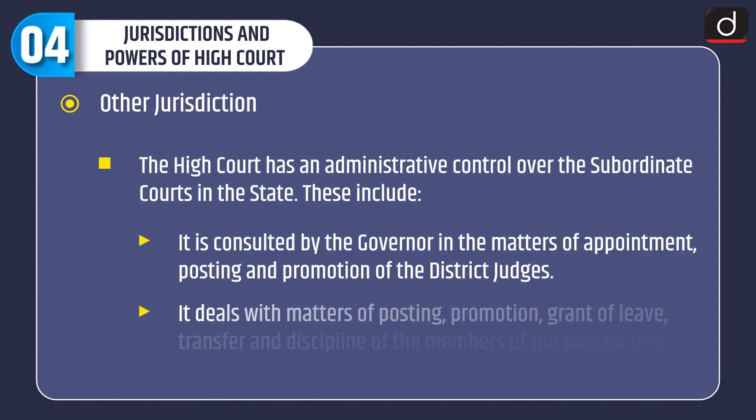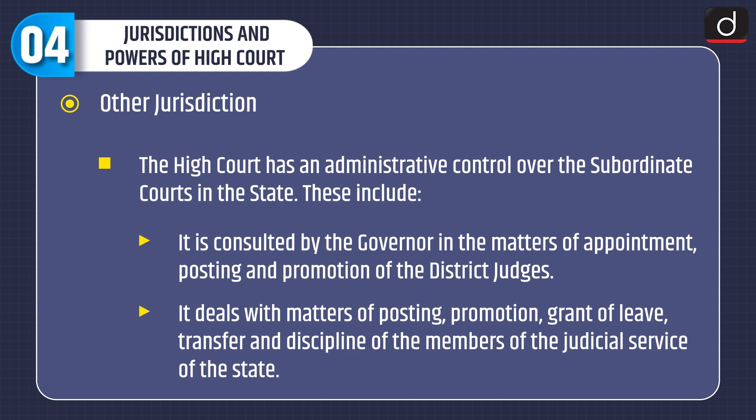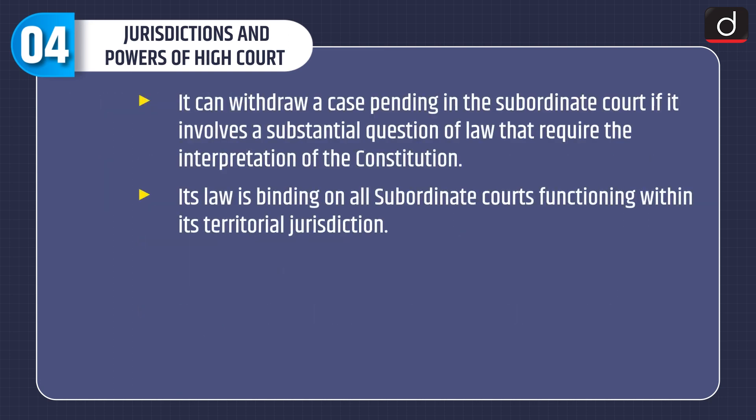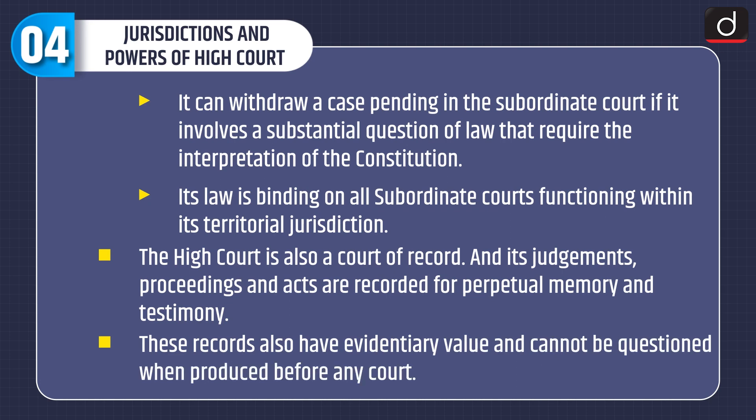The High Court has administrative control over subordinate courts in the state. It is consulted by the Governor in matters of appointment, posting and promotion of district judges. It deals with matters of posting, promotion, grant of leave, transfer and discipline of members of the judicial service of the state. It can withdraw a case pending in a subordinate court if it involves a substantial question of law requiring interpretation of the Constitution. Its law is binding on all subordinate courts within its territorial jurisdiction. The High Court is also a court of record, and its judgments, proceedings and acts are recorded for perpetual memory and testimony, having evidentiary value and cannot be questioned when produced before any court.